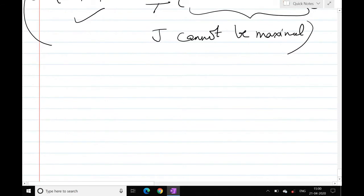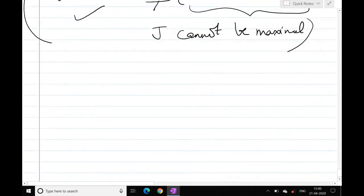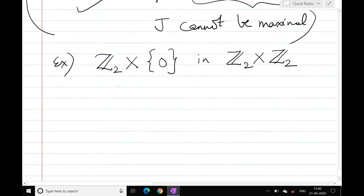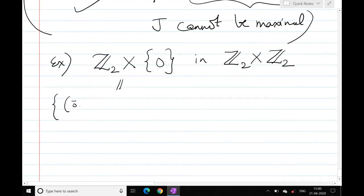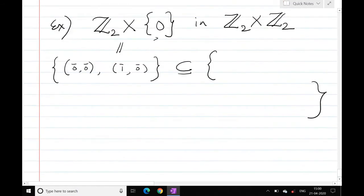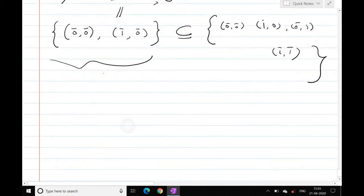Now, if you look at some examples, look at ideal Z2 cross {0} in Z2 cross Z2. What are the elements of Z2 cross {0}? Z2 has 0 bar and 1 bar. Second element is 0, these are the two elements of Z2 cross {0}, which is a subset of Z2 cross Z2. So one can check that this is ideal.